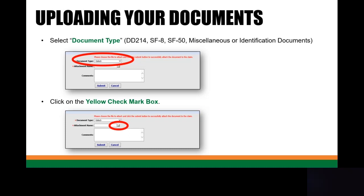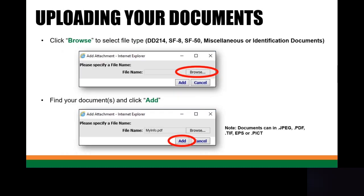Next you're going to go ahead and select the document type. You can either select DD-214, SF-8, SF-50, Miscellaneous, or Identification Documents. Below that you're going to go ahead and click on the yellow check mark box. Next you're going to go ahead and select Browse, then find the document that you need and click on Add.